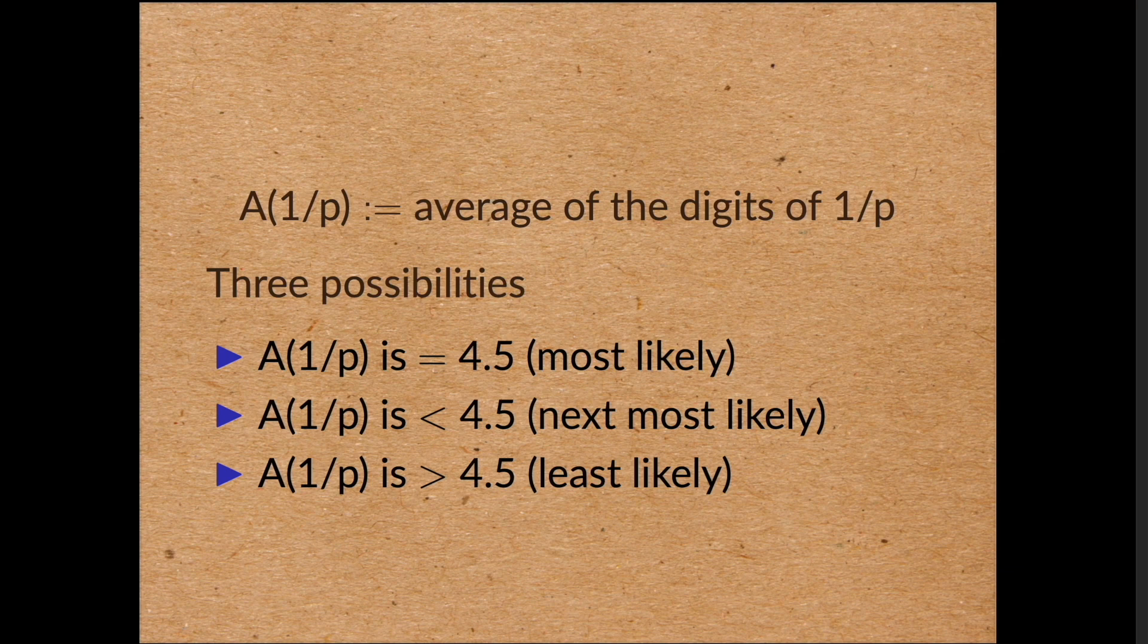Having answered this, now we've come to our second problem. For a prime p, how small can a of 1 on p be? And how big can a of 1 on p be?